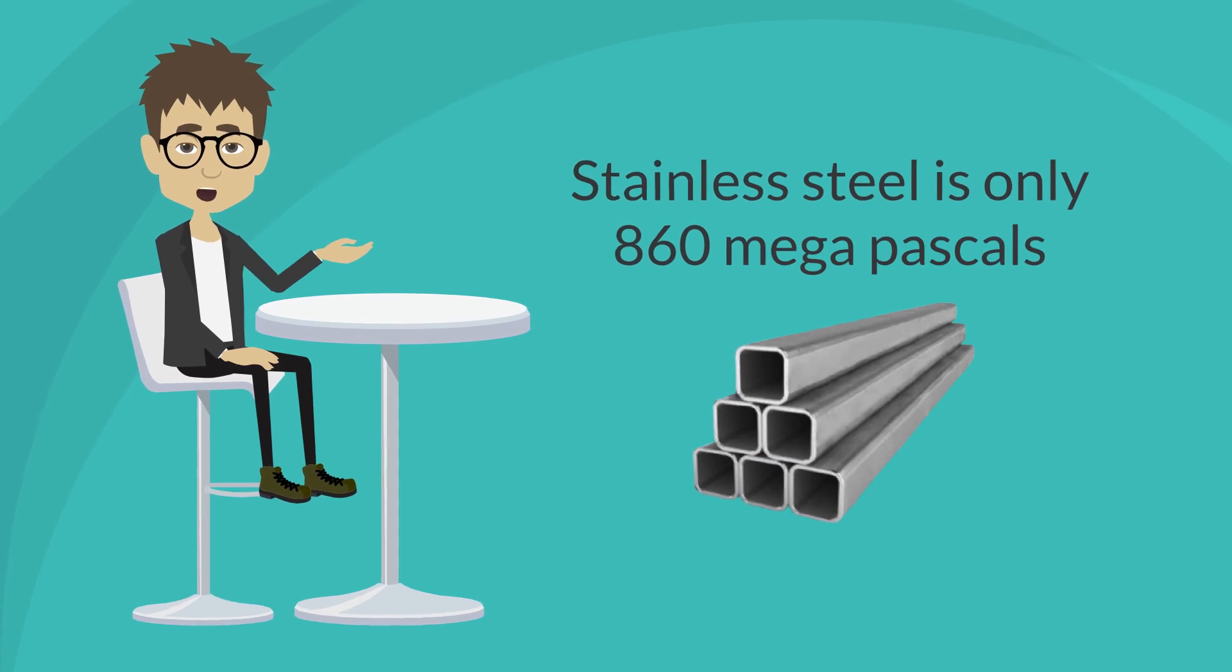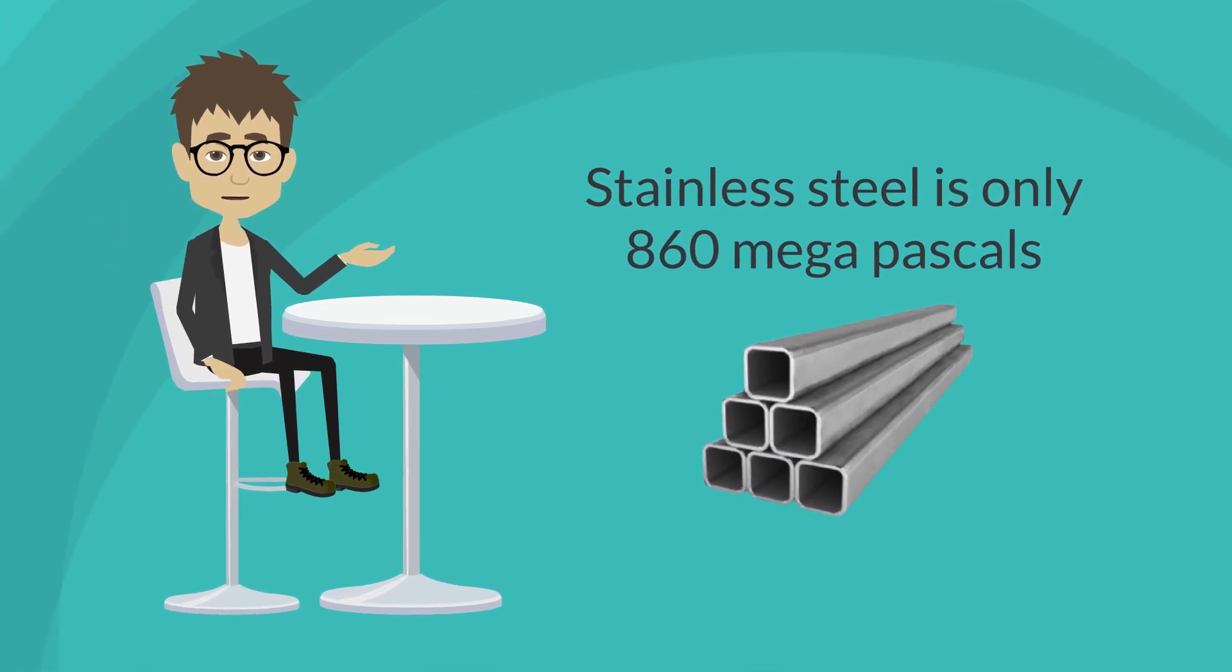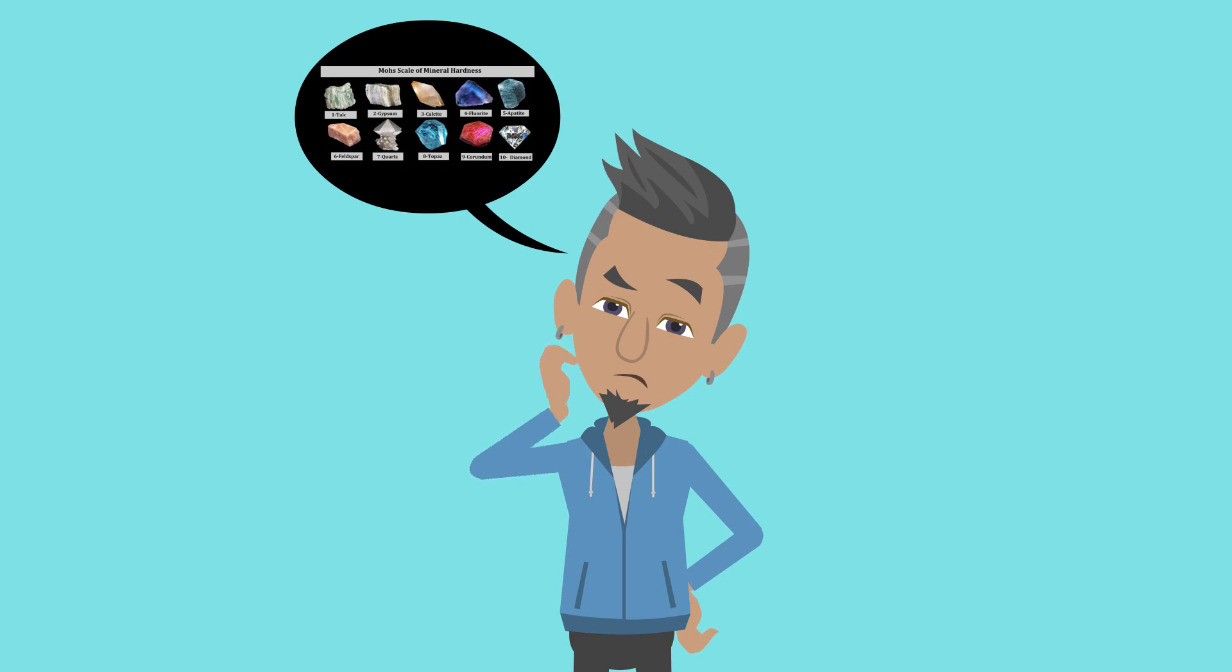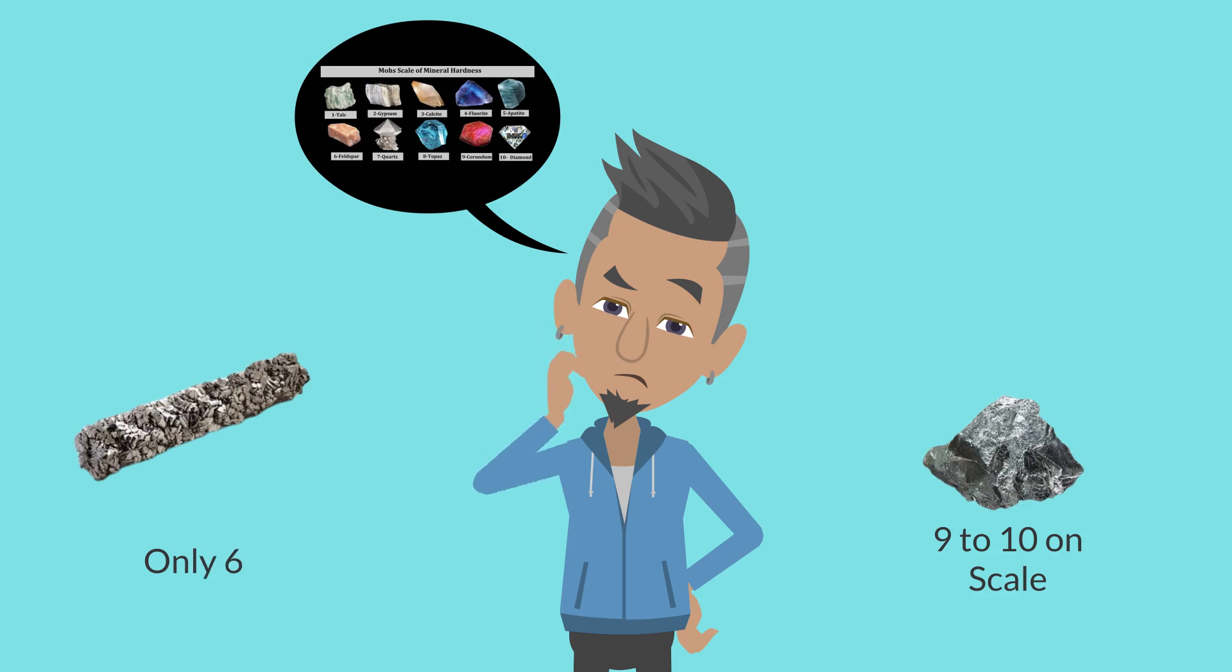By comparison, stainless steel is only 860 megapascals. If you are familiar with the Mohs scale of mineral hardness, tungsten registers a 9 out of 10 on the scale, while titanium is only a 6.